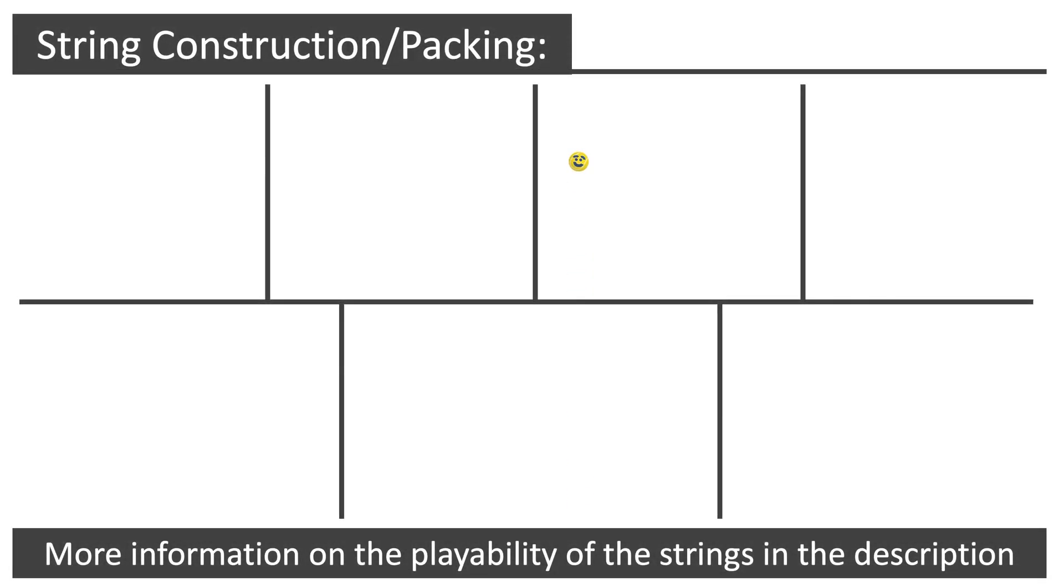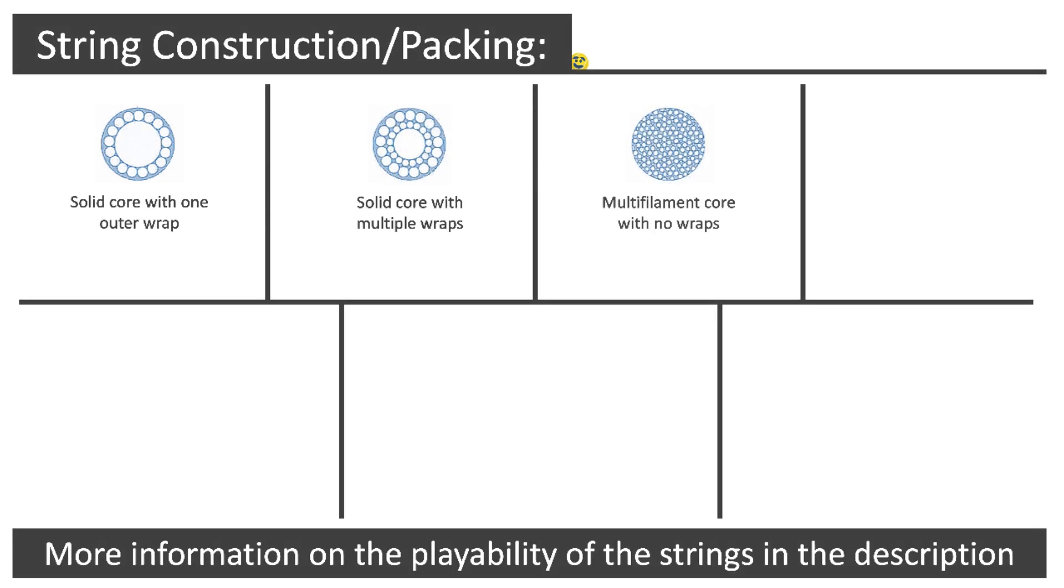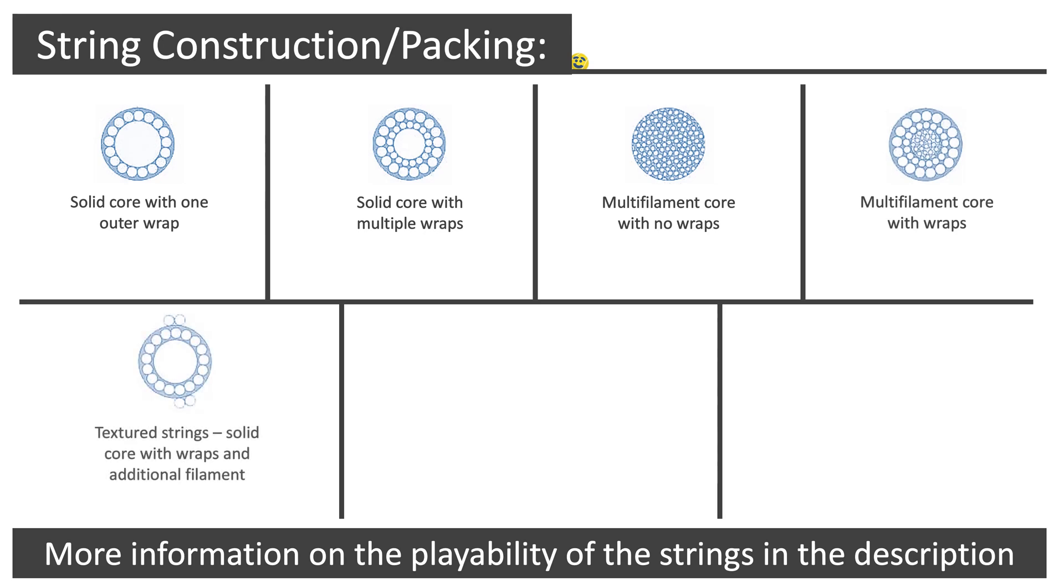In addition to the variety of materials on offer to construct a tennis string, there are also various ways of packing the strands of material. These material types include a solid core with one outer wrap, a solid core with multiple wraps, a multi-filament core with no wraps, a multi-filament core with wraps, textured strings, a solid core with wraps and additional filament, composites, blends of materials like alloys and metals, and monofilaments, a solid core with no wraps.